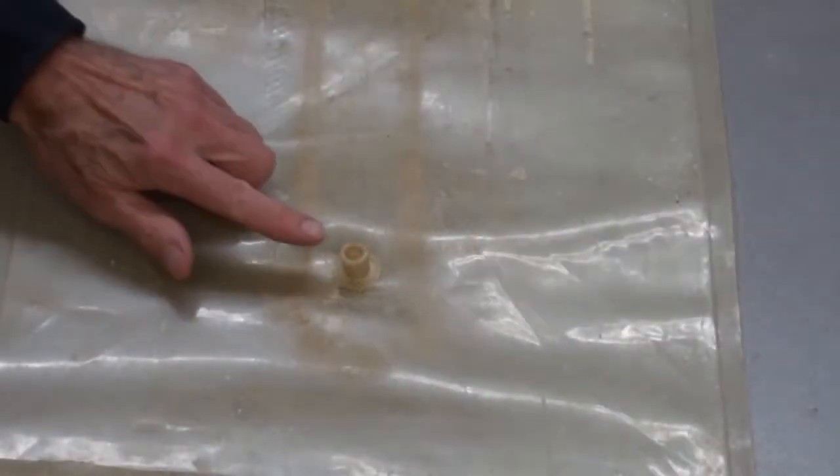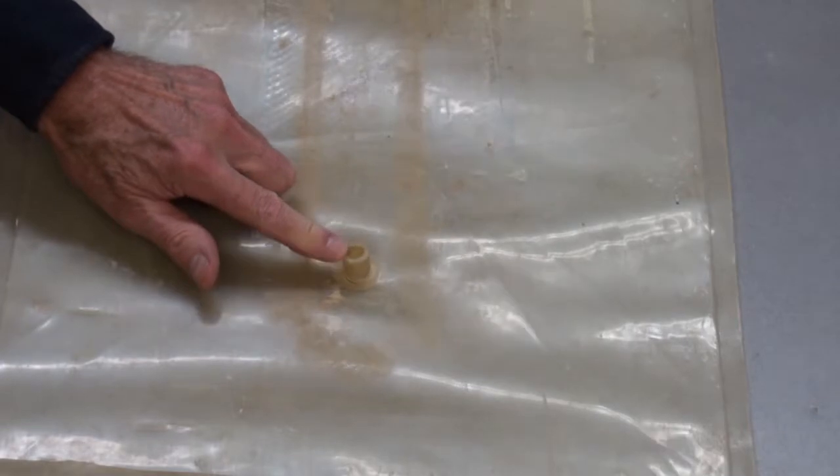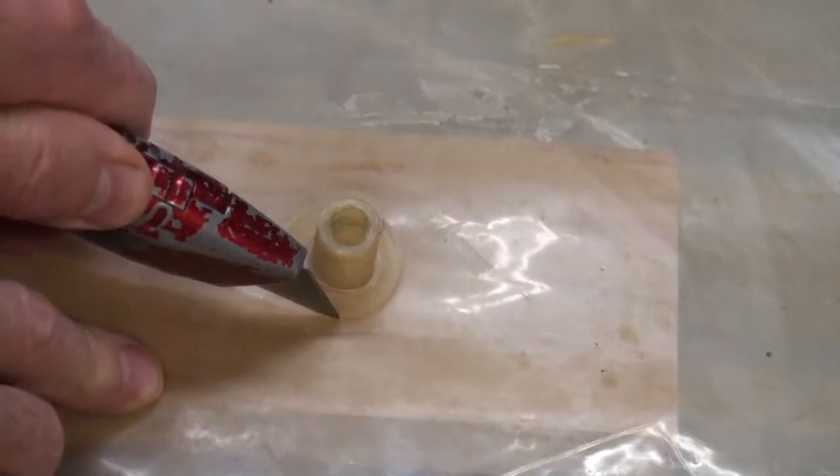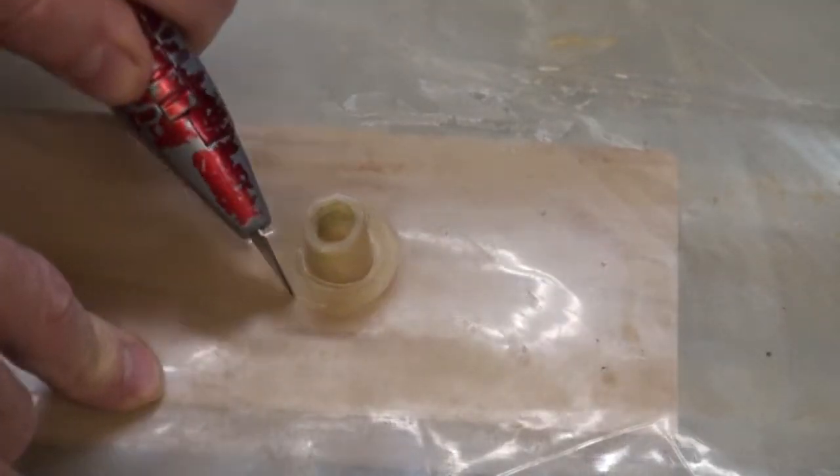For repairing a nipple, the procedure is basically the same with a couple of extra steps. Here's a bag that has seen a lot of wear and could use a new nipple. First, cut the old nipple out by placing a block of wood on the inside of the bag and then cutting around the flange of the old nipple.